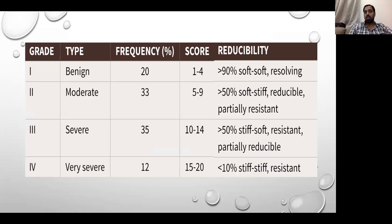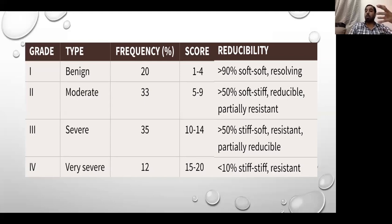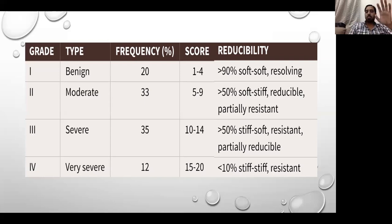A score of 1 to 4 is benign — a soft-soft deformity with 90% reducibility, easily treated. A score of 5 to 9 is moderate — soft-stiff. The severe form has more bony component than soft tissue, described as stiff-soft, where stiff refers to the bony component and soft refers to the soft tissue component. Very severe deformity is stiff-stiff, with reducibility of less than 10%.